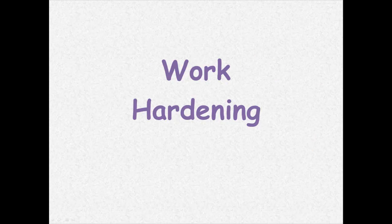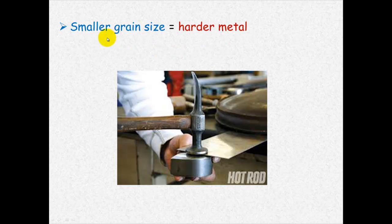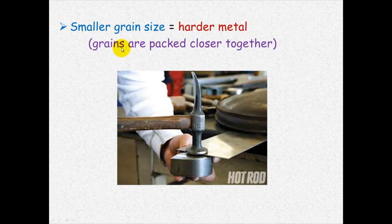Work hardening. If we change the size of the crystals we can change the properties of the crystals. Hammering or working cold metals can cause these crystal grains to rearrange. Remember, the smaller the grain size the harder the metal will be. And this is because the grains are packed closely together.